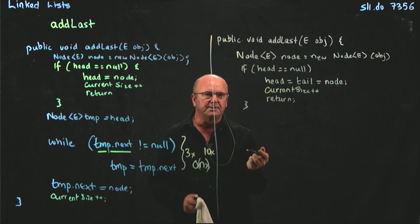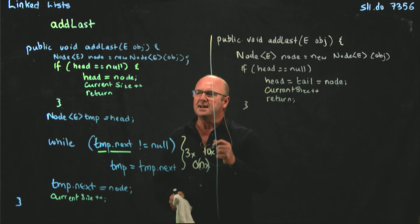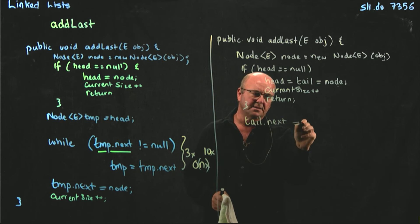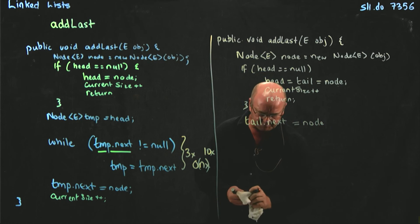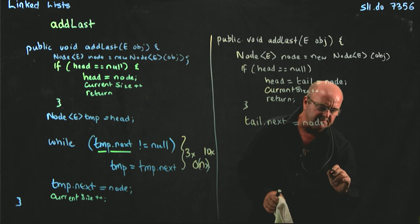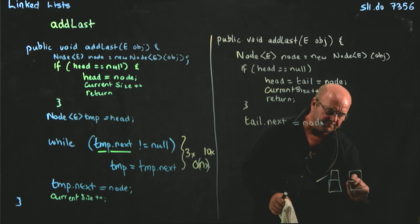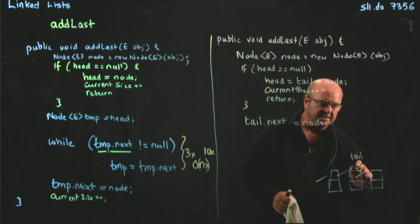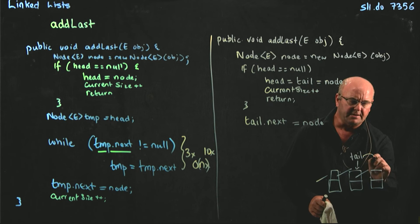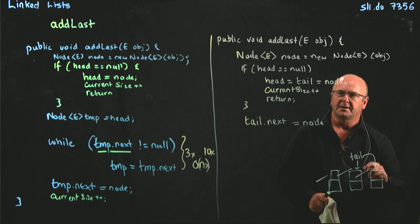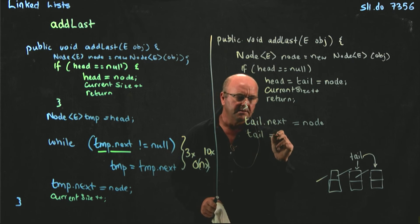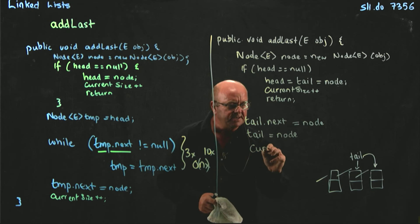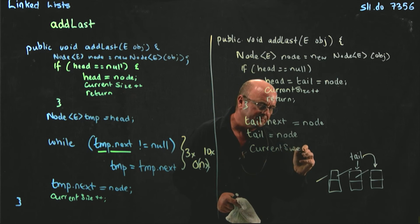If we have things in our list, all we need to do is find our tail pointer and set its next to be our new node: tail.next equals node. Then, since we've added something to the list, we move our tail pointer so that next time we try to add something it's in the right place: tail equals node. Then we increment our size and we're done.